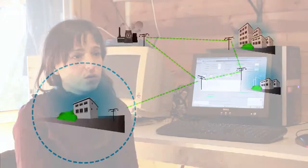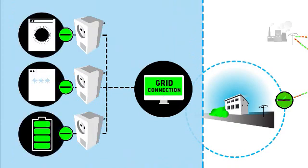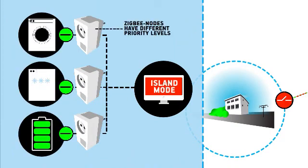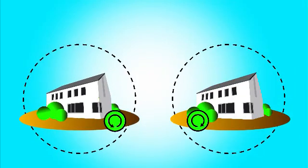Imagine a household connected to the grid. Once a critical situation occurs, the system decides to disconnect the house from the grid. And at this point, the load shedding starts if an imbalance state occurs.